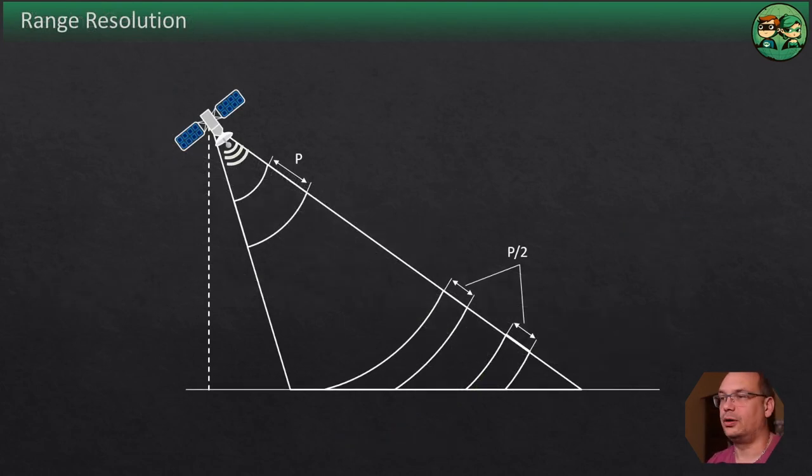The range or across track resolution is dependent on the length of the pulse. Two distinct targets on the surface will be resolved in the range dimension if the separation is greater than half the pulse length. For example, targets A and B will not be separable while targets C and D will. Slant range resolution remains constant independent of range.